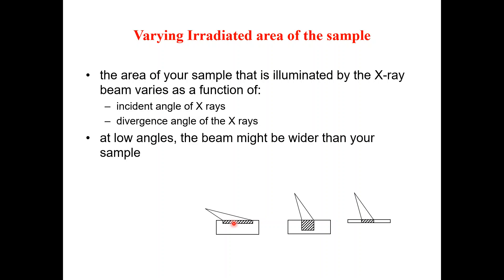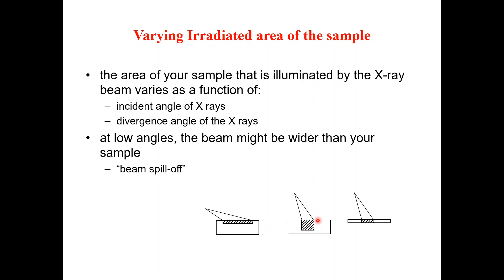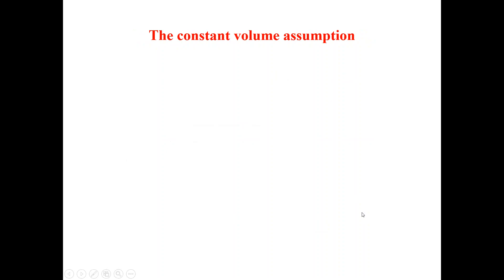At low angles, the beam might be wider than your sample — this is called beam spillover. At higher angles, the irradiated area becomes smaller. You can observe this effect by examining how the beam shape changes with varying incident angle or divergence angle of the X-rays.